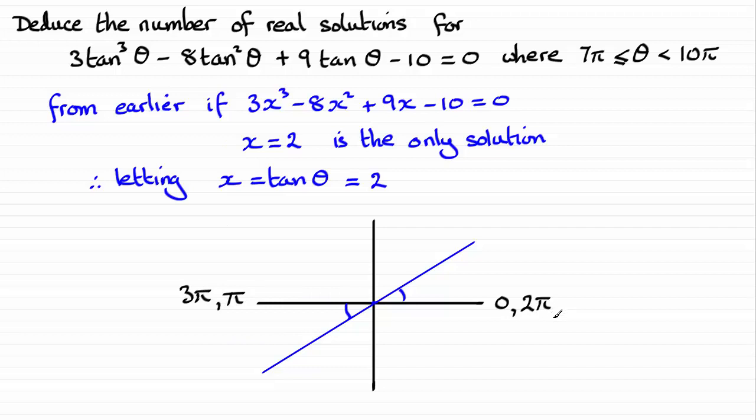Now if I was to keep this up, on this side I've got all the even multiples of π. So in other words, you've got 4π, 6π, 8π, and 10π.